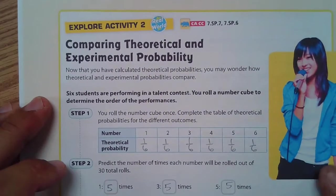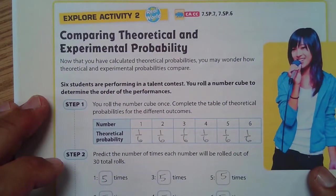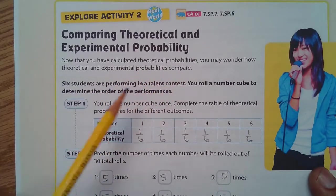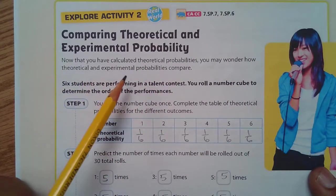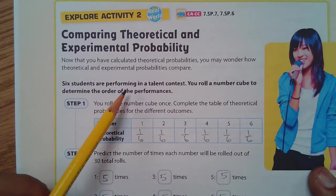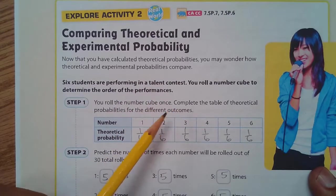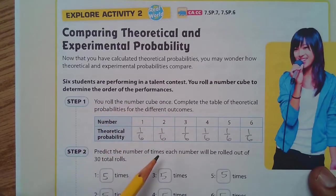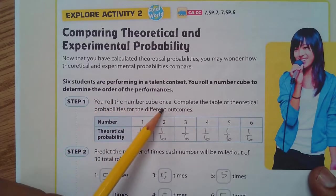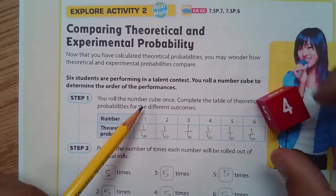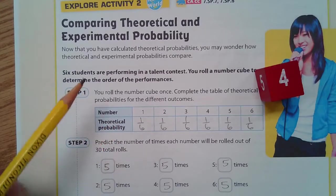Next. Our second activity, comparing theoretical and experimental probability. Now that you've calculated theoretical probabilities, you may wonder how theoretical and experimental probabilities compare. Six students are performing in a talent contest. So, you roll a number cube to determine the order of the performances. You roll a number cube, and this is the number cube, just to remind you.